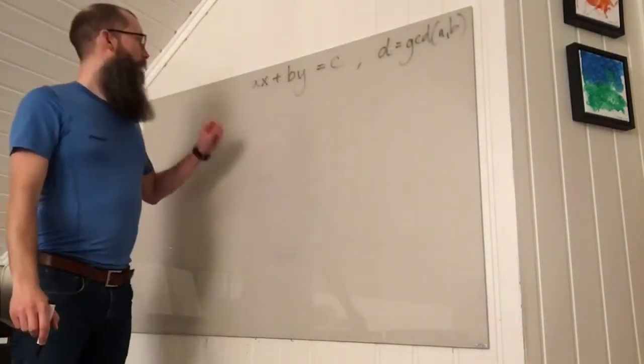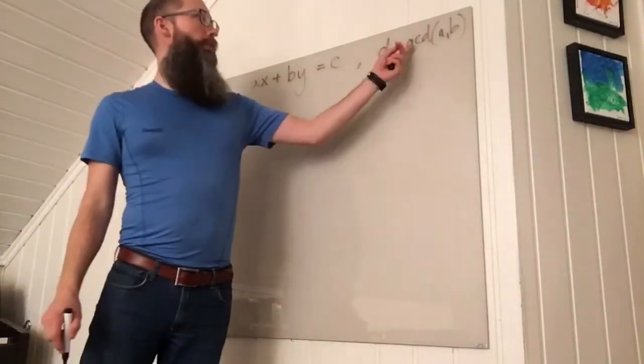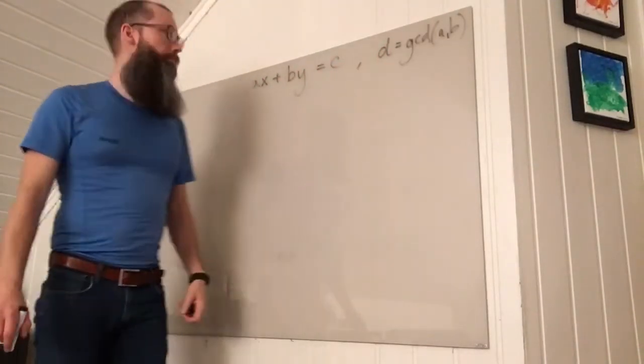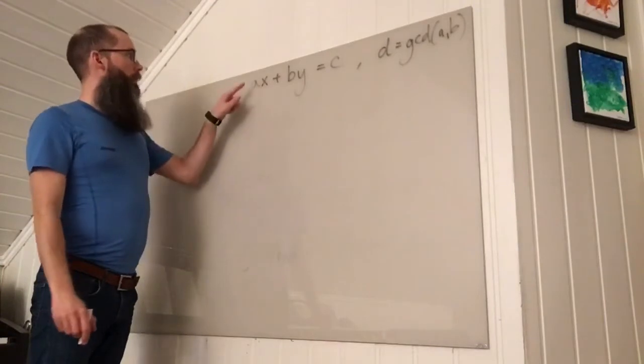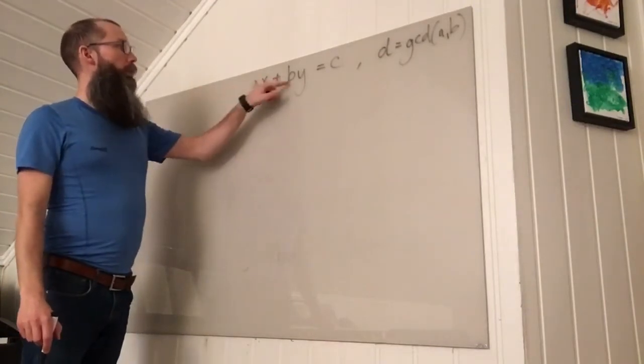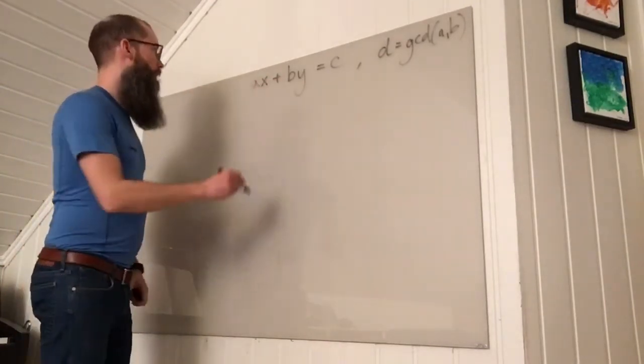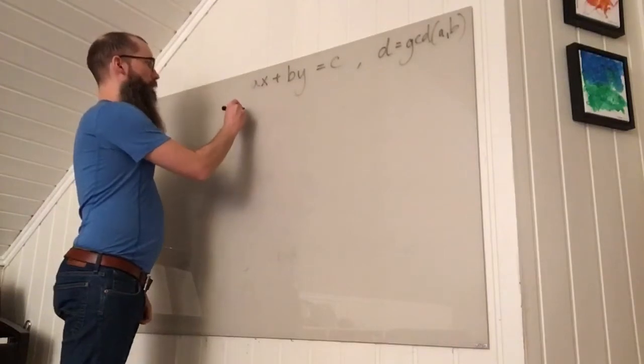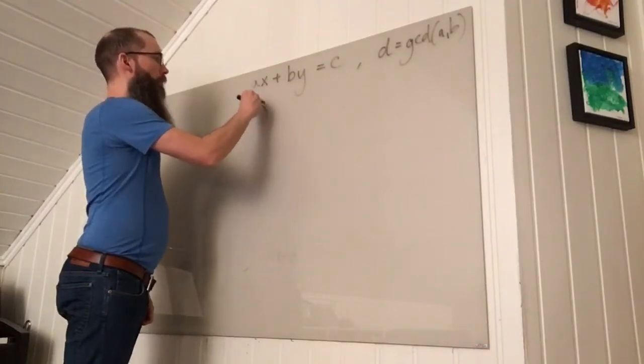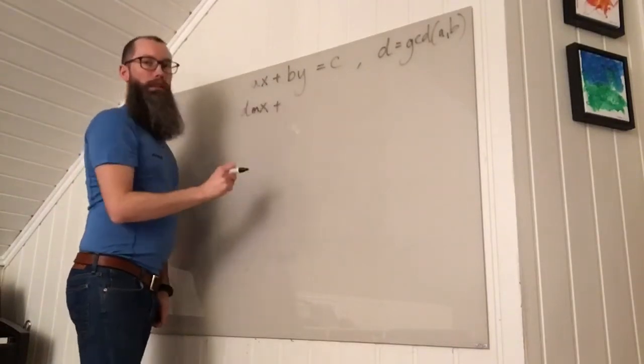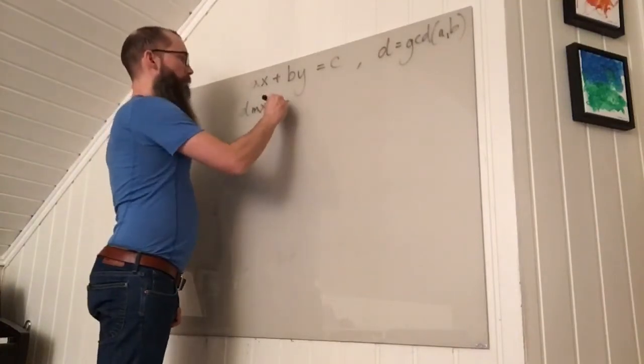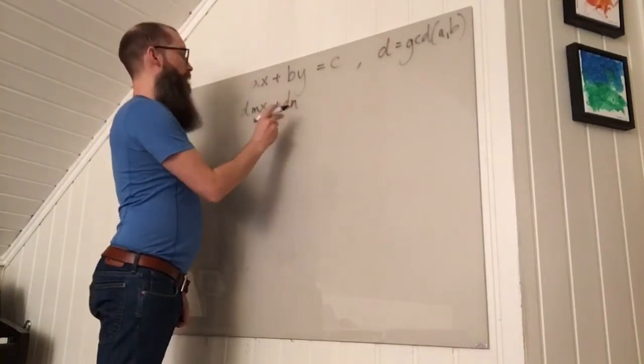To answer the first question, let D be the greatest common divisor of A and B. Well then, both A and B are divisible by D. So A can be written as D times M, and B can be written as D times N for integers M and N.